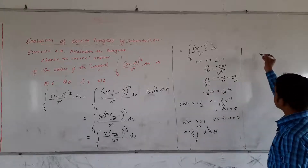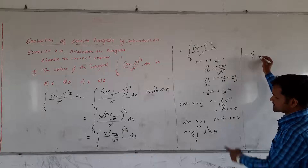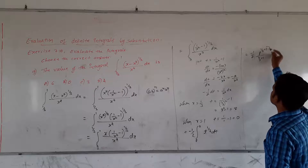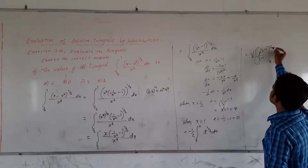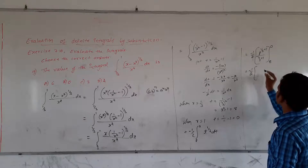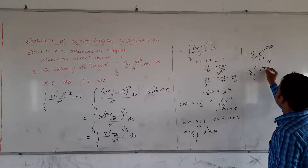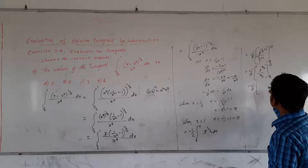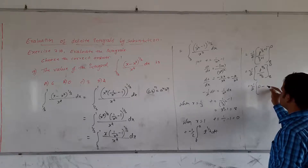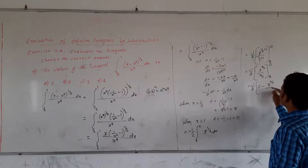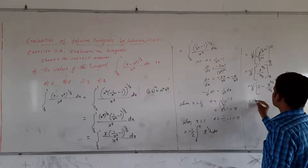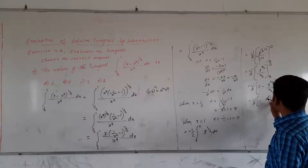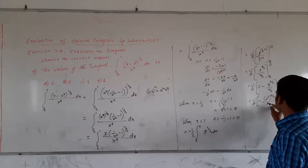We can integrate it now. Substituting t for (1/x² minus 1), the integral becomes minus 1/2 outside, times t raised to 1/3, integrated from 8 to 0 into dt. This equals minus 1/2 times [t raised to (1/3 + 1) / (1/3 + 1)] from 8 to 0. That is t raised to 4/3, divided by 4/3, from 8 to 0. Substituting: minus 1/2 times [0 minus 8 to the power 4/3 / (4/3)]. Now 8 can be written as 2³.